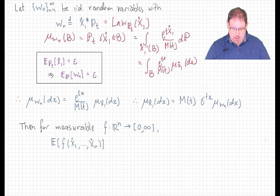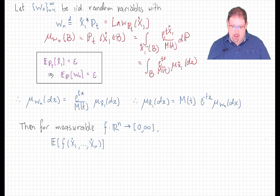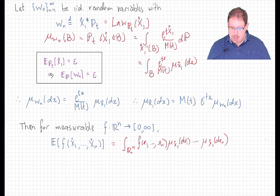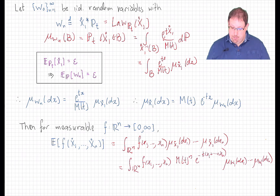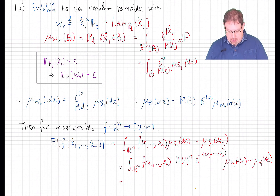This means we can write expected values of functionals of the x's in terms of expected values of related functionals of the w's. In particular, if f is any measurable, non-negative, potentially infinite-valued function of n variables, then the expected value of f of the first n centered original random variables x1 through xn can be written as the integral of f against the product measure of the x's because they are iid. Using this density result, we can write this instead as the product measure of the laws of the w's with an exponential factor, and employing the change of variables for the w random variables gives us this formula.